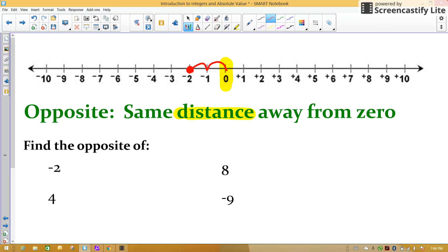Well, it's 1, 2 spaces to the left. So we want to find what number is 2 spaces to the right of zero. Well, 1, 2, that would be positive 2.